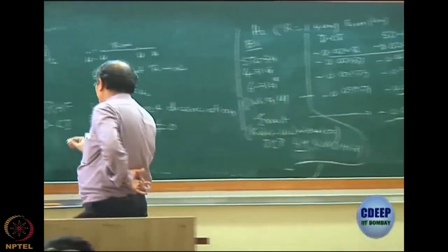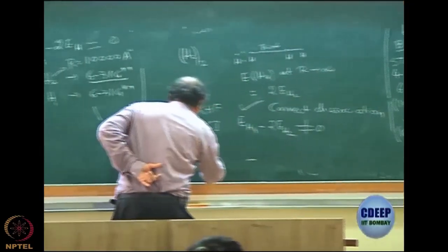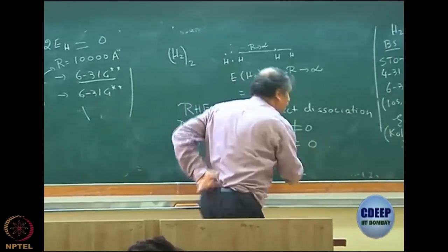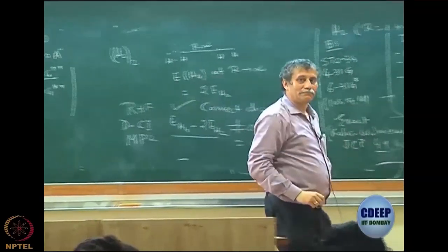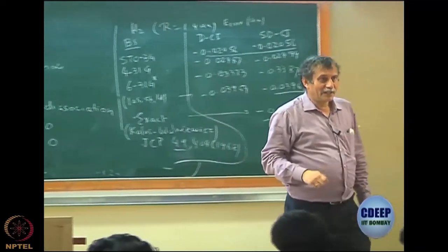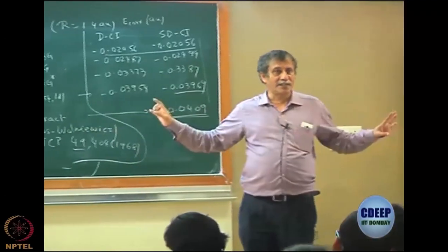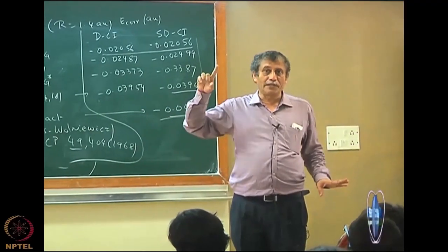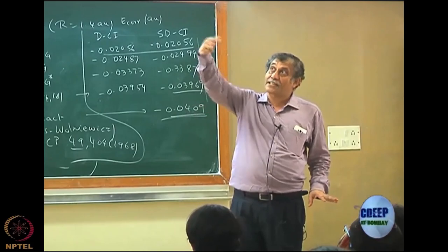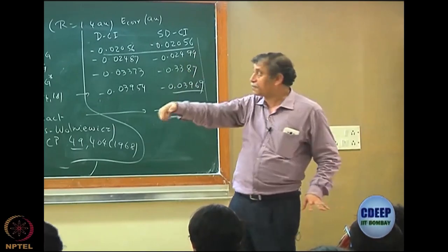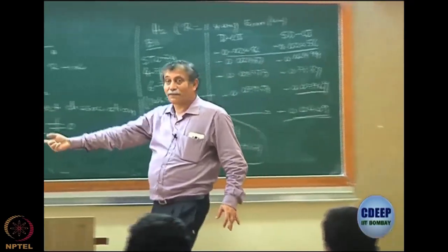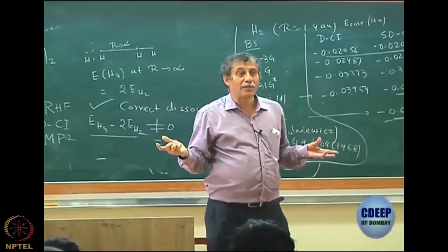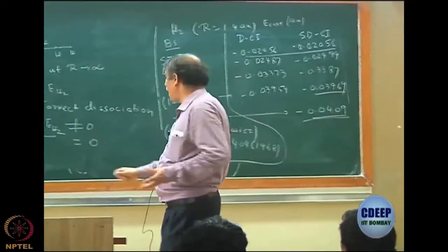Interestingly, if you do MP2 for the same H₄ system, E(H₄) − 2·E(H₂) equals zero — MP2 gives correct dissociation. But full DCI gives a non-zero result, which is bad.